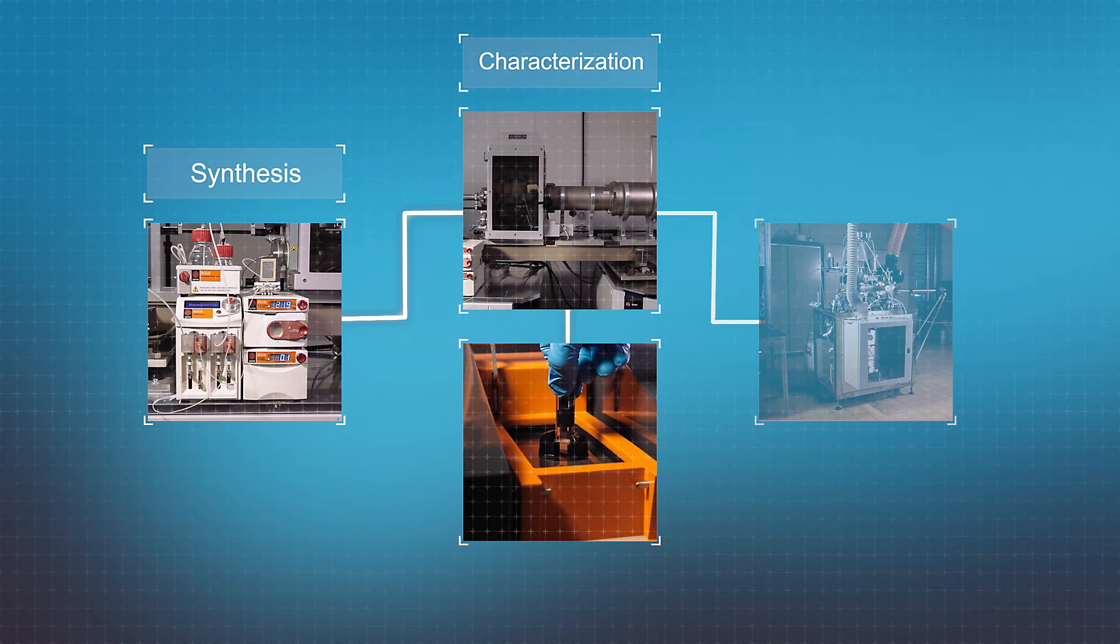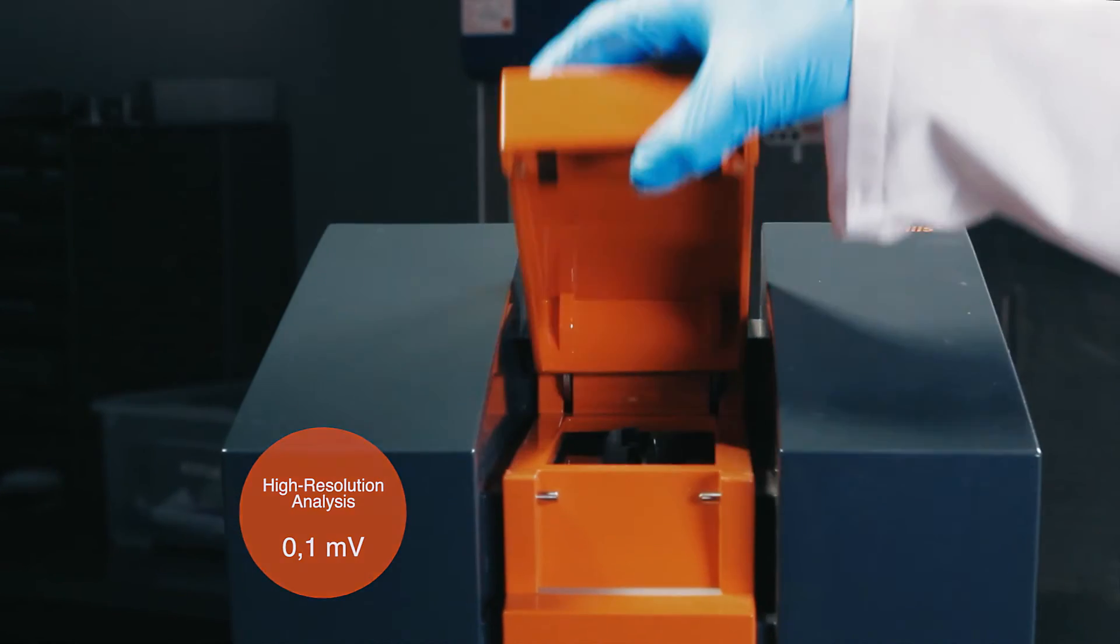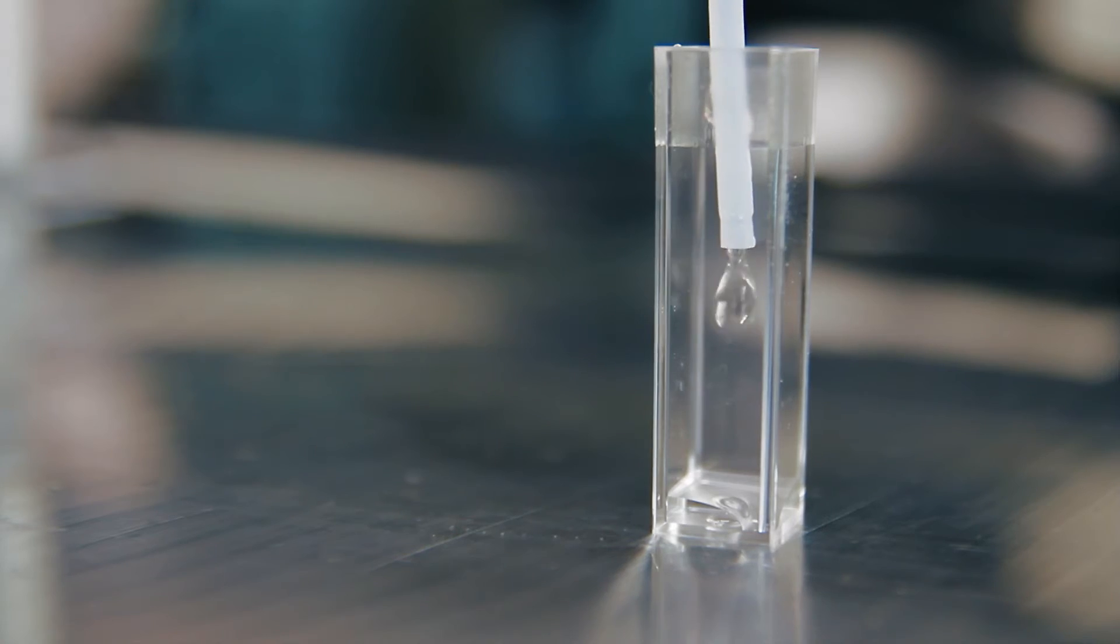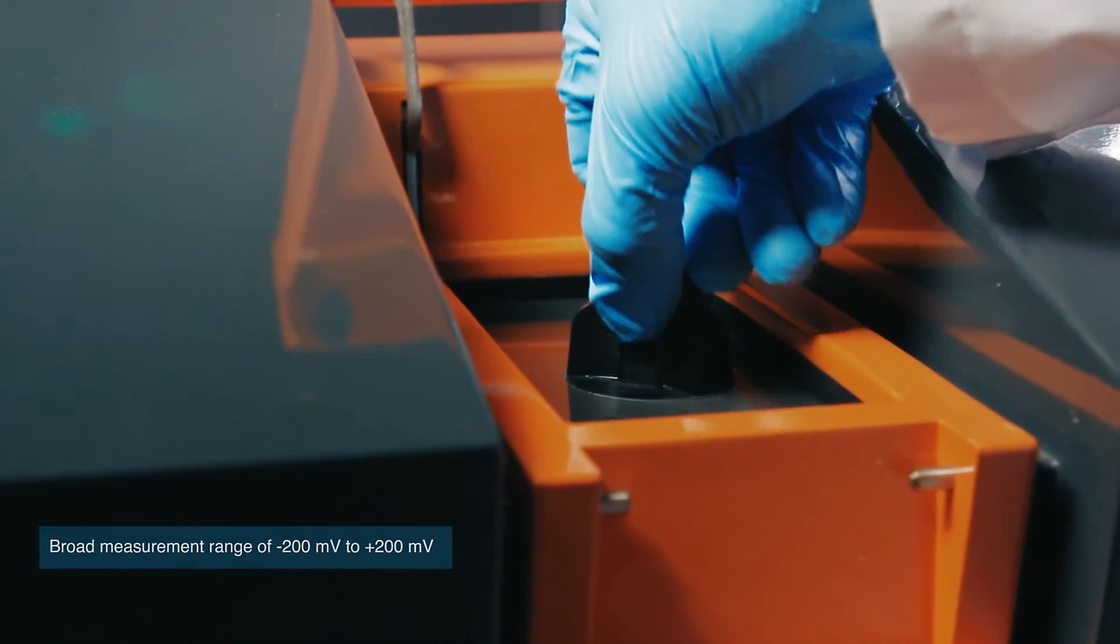High resolution zeta potential measurements are implemented in the production line by using a semi-automated bypass system. This arrangement ensures a fast and easy way to determine the nanoparticle's charge.